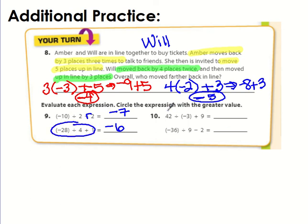42 divided by negative 3. So this would be negative 14. And then negative 14 plus 9. So I would subtract and 14 take away 9 is 5. But negative 14 had a greater absolute value. So negative 5. And then we've got negative 36 divided by 9. That is negative 4. And then I'm going to add the opposite. And negative 4 plus negative 2 is negative 6. And so we would circle this one.